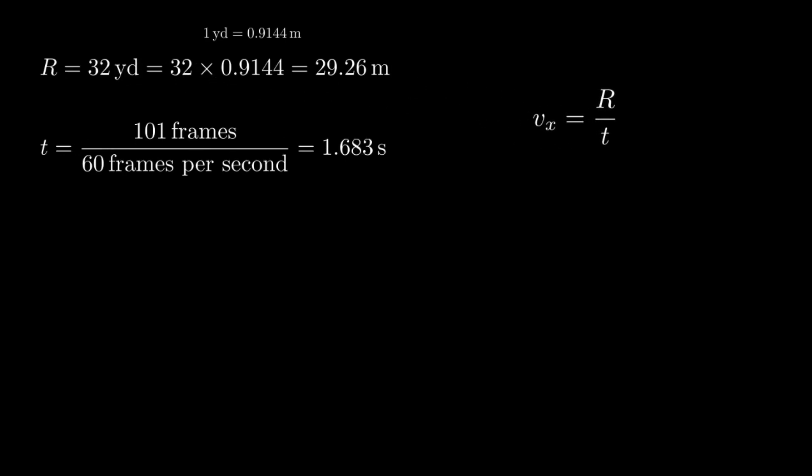You can break down the throw by first calculating the range. Mendoza releases the ball around the 32-yard line, converting to roughly 29 meters. We find out that the ball was in the air for around 101 frames at a 60fps frame rate. We then find the horizontal velocity, which comes out to around 17.38 meters per second.